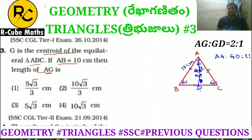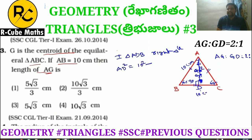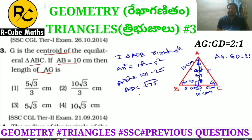AD is calculated using the Pythagorean theorem. AB is 10 cm, and BD (half of BC) is 5 cm. So AD squared equals 10 squared minus 5 squared, which is 100 minus 25 = 75. Therefore AD equals root 75, which equals 5 root 3.